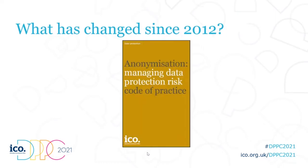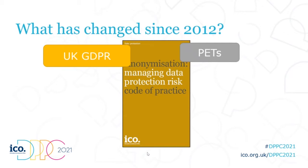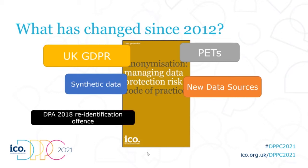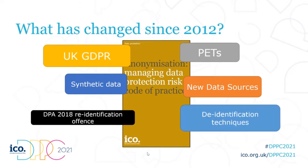A lot has changed since 2012 when we released our original anonymization code of practice. The most obvious change is the UK GDPR introduction in 2018. We also have the emergence of new Privacy Enhancing Technologies, synthetic data, new data sources from Internet of Things devices and wearables, the Data Protection Act 2018 re-identification offense introduced to prevent organizations from maliciously re-identifying data, and new, more advanced re-identification techniques seen in academia.